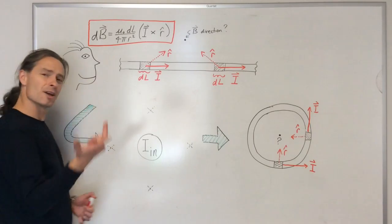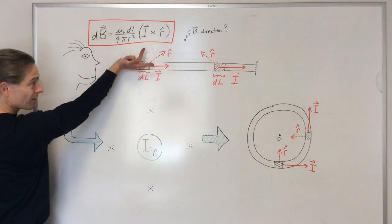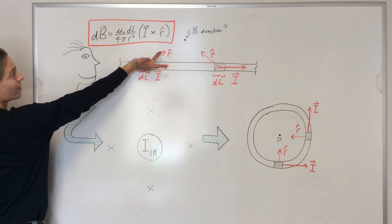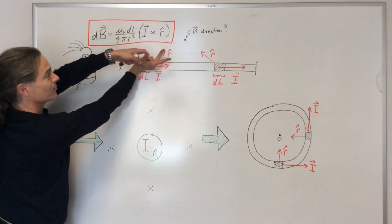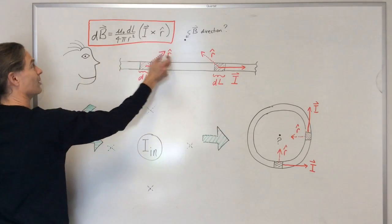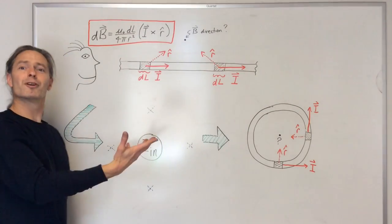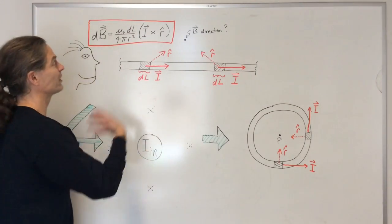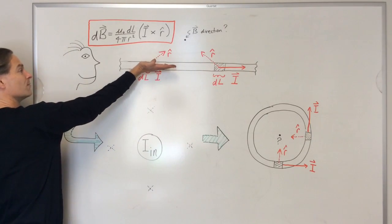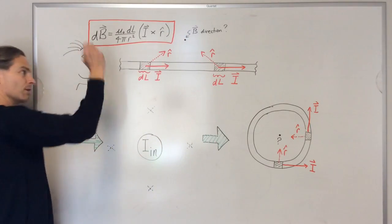Here's another implementation of the right-hand rule: the three-finger method. Stick your first finger in the direction of the first vector — that's the i vector, the current vector — second finger in the direction of the r-hat unit vector, and your thumb, pointing out of the board, gives the direction of the magnetic field, because that's the direction of this cross product. No matter which implementation you prefer, the cross product of the current vector and the r-hat unit vector is out of the board at this location due to this current element.